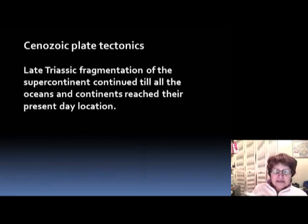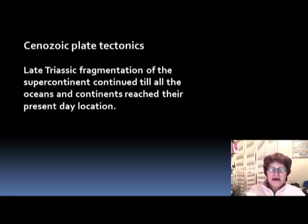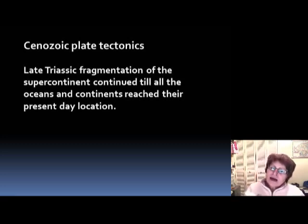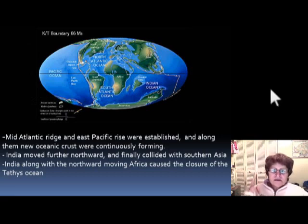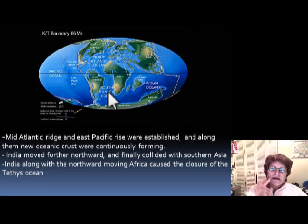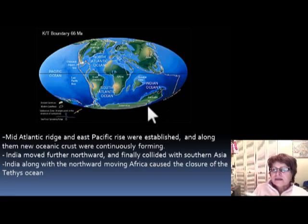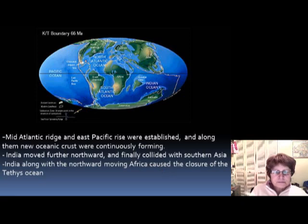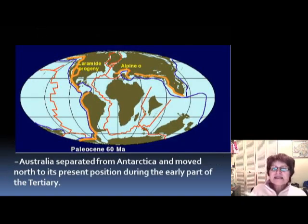Let's start with plate tectonics. Remember we left off at the end of the Cretaceous, when the continents had moved away from the Pangean position to relatively close to today's position. The last 66 million years saw the continents moving to their exact present-day positions. At the end of the Cretaceous, the Mid-Atlantic Ridge was pretty much established, India had started to move north and almost reached the equator, Australia and Antarctica were still together, and Greenland had begun breaking off from North America. This slide shows the Paleocene geography from about 60 million years ago.